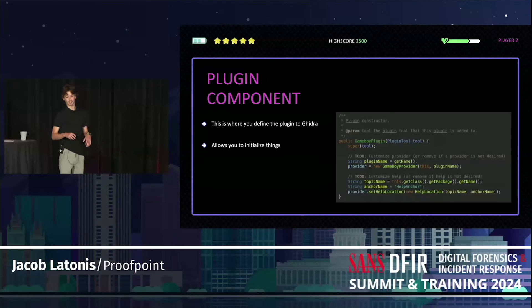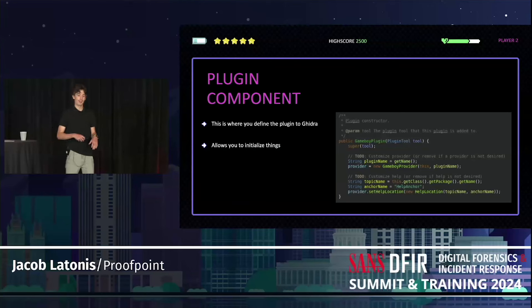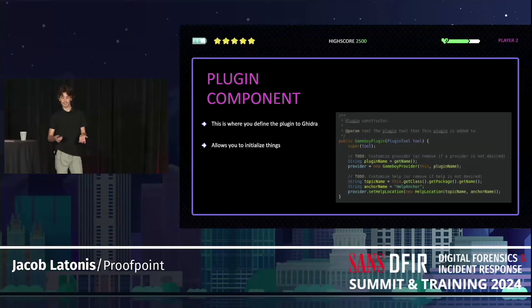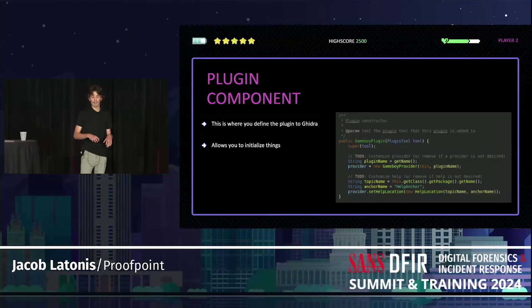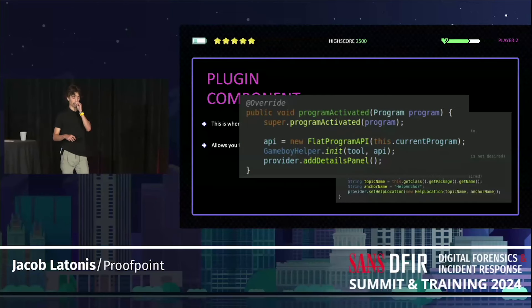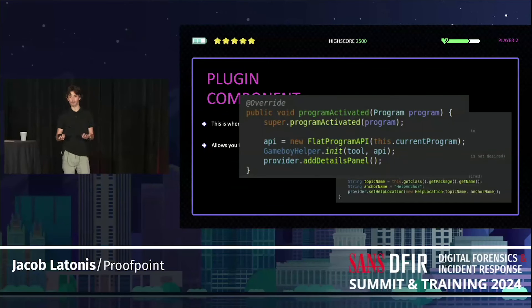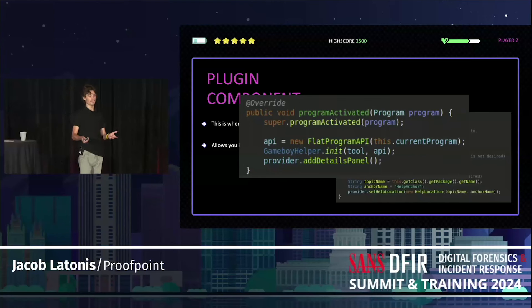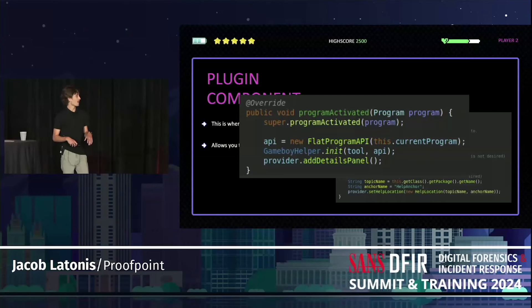Now let's dive into the three or four plugin components I feel are important — three you need, one I think you should add because it makes everything easier. The plugin component is where you actually define the plugin to Ghidra, initialize everything, tell Ghidra the plugin exists, give it a name, and point to help information. You can also extend behaviors — with my plugin, I didn't want things to start until a binary was loaded into memory to avoid crashes, so I override the function, initialize my flat program API and a Game Boy Helper, then spawn the provider.